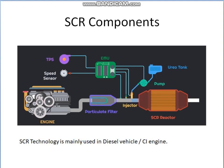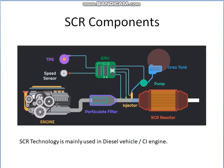SCR technology is mainly used in diesel vehicles or CI engines. Components as seen in the figure include the engine, exhaust gas output, particulate filter, injector, various sensors connected to the engine control unit, speed sensor, urea tank, and a nozzle for injecting urea. The SCR reactor is the main component of the entire system.